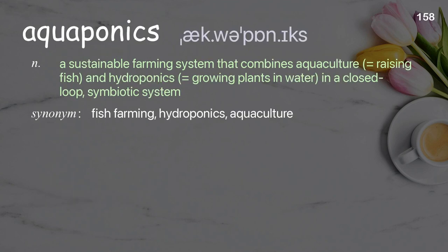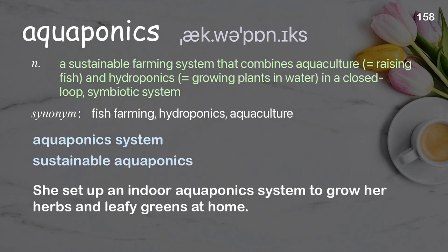Aquaponics: a sustainable farming system that combines aquaculture (raising fish) and hydroponics (growing plants in water), in a closed-loop, symbiotic system. Examples: Aquaponics system. Sustainable aquaponics. She set up an indoor aquaponics system to grow her herbs and leafy greens at home.